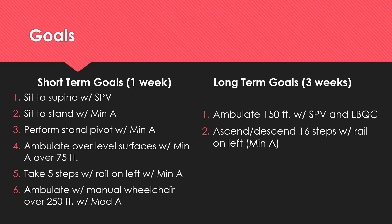His long-term goals consisted of being able to ambulate 150 feet with supervision and a large base quad cane to access his home environment. Another goal was to ascend and descend 16 steps with a rail on the left with minimal assistance to access his bedroom on the second floor.